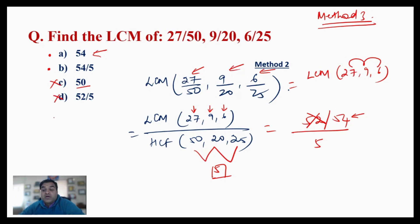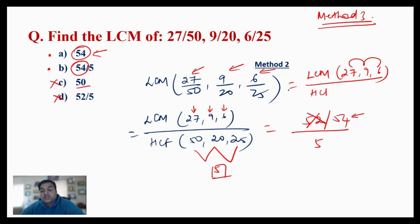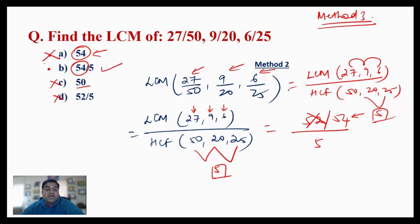Now between the remaining options A and B, since 54 is common to both, we go directly to the HCF of the denominators: HCF of 50, 20, and 25 is clearly 5. So the answer must be divided by 5, making 54/5 the correct answer. Hope you've now understood all three methods for finding the LCM of numbers given in fraction form.